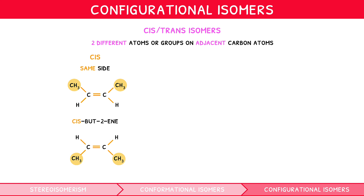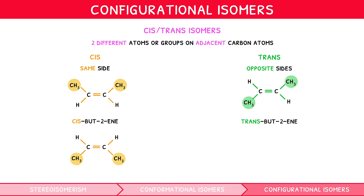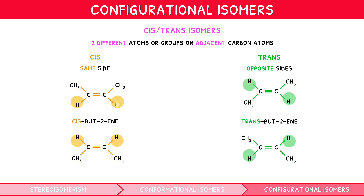Placing both CH3 groups on the bottom edge is equivalent to the cis arrangement. However, if we moved one of the CH3 groups to the opposite side, we call this a trans-isomer, named trans-but-2-ene. Likewise, moving the other group gives the same result. It is worth noting that one could focus on the hydrogens rather than the CH3 as the group being moved — it makes no difference.